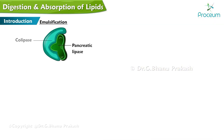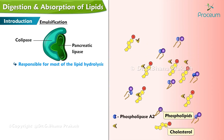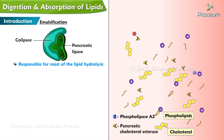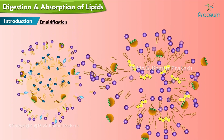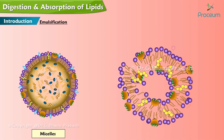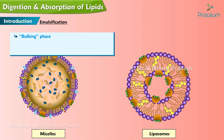Pancreatic lipase and colipase are responsible for most of the lipid hydrolysis. Dietary and biliary phospholipids and cholesterol are further hydrolyzed by the action of phospholipase A2 and pancreatic cholesterol esterase. The resulting mixture is a complex soup of lipolytic products. These products, along with other lipids and fat-soluble vitamins, are mixed with bile salts, forming small aggregates known as micelles or larger aggregates known as liposomes. This is called the bulking phase, which happens in the lumen of the small intestine before absorption occurs.